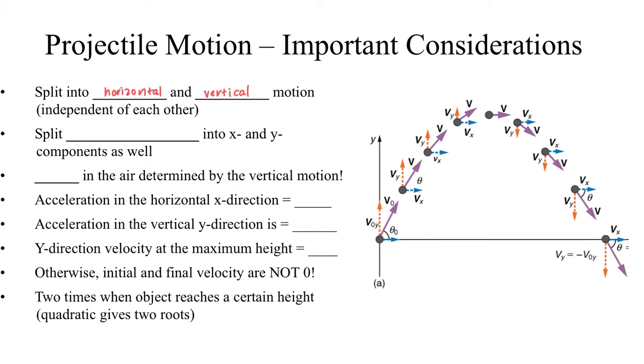This means that we'll also want to split our initial velocity into components, x and y components as well. Now, if we're dealing with a projectile that's launched at some angle above the horizon, then we know that velocity is a vector. We know how to break vectors into their respective components.